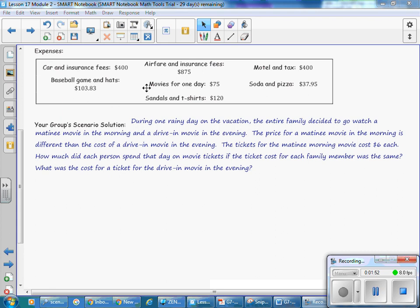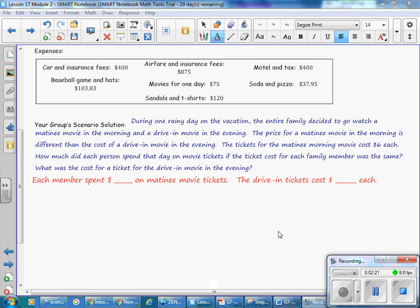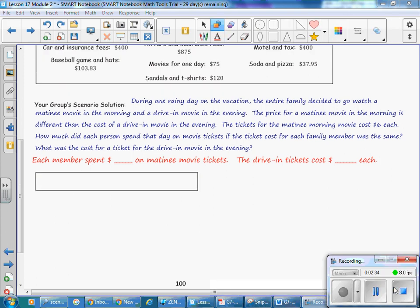Looking at our expenses and the movies. The movie for one day cost $75 for the entire family. The family consists of John and Ag and three children, so there are five people in the family all together. What we want to find out is how much each member spent on movie tickets and we need to know the cost of a drive-in ticket as well. We are going to model the problem and solve it algebraically as well. So we want to first start out by making a bar. Pause the video and draw the rectangle on your paper.